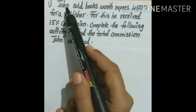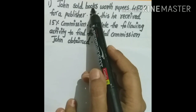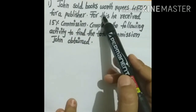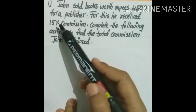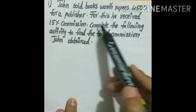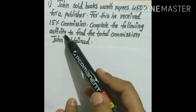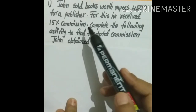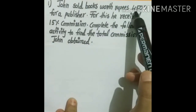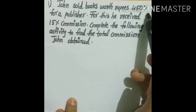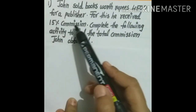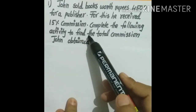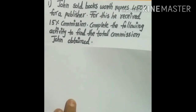Question number one: John sold books worth ₹4500 for a publisher. For this he received 15% commission. Complete the following activity to find the total commission John obtained. In this question, the selling price of the books is ₹4500 and John received 15% commission. We have to complete this activity.